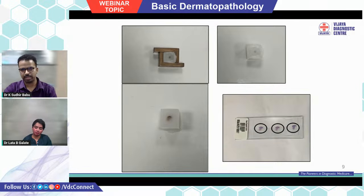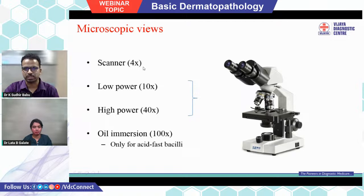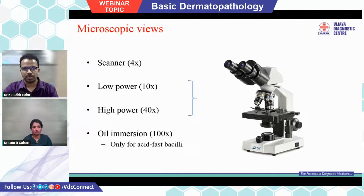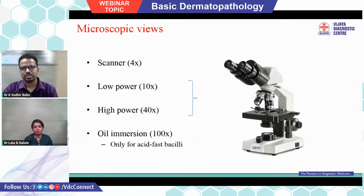Now that the slide is ready, we need a microscope. A microscope has four different objectives. Starting with the scanner view — 4x objective — the main function is to identify and scan the section when you keep it under the microscope. Then we go to the low power view, the 10x objective, where we assess the pattern of injury or which area is predominantly involved. Then we go to the 40x higher power lens, wherein we see cellular detail properly. Finally, we also look at oil immersion, mainly for acid-fast bacilli identification.